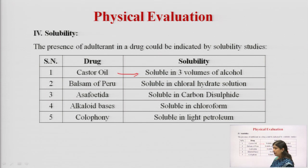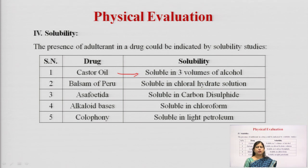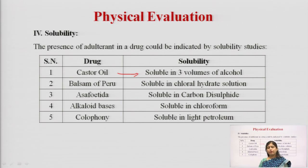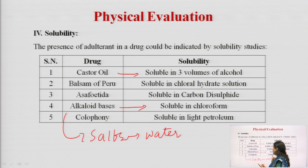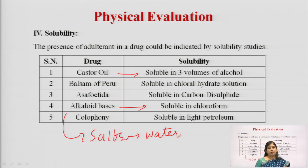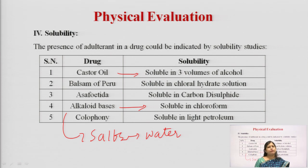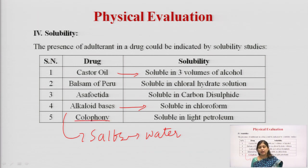For example, castor oil is reported to be soluble in three volumes of alcohol; balsam of Peru is soluble in chloral hydrate solution; asafoetida is soluble in carbon disulfide; alkaloid bases are soluble in chloroform. Alkaloid bases mean the free form of alkaloid — alkaloids also exist as salts, and salts are generally not soluble in chloroform but are soluble in water. So solubility changes with the property of the drug: free base is soluble in chloroform, salt form is soluble in water. Colophony is soluble in light petroleum ether.